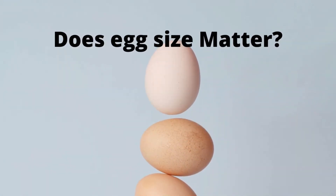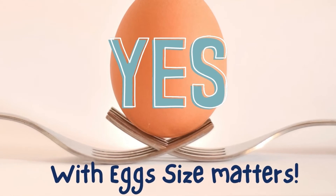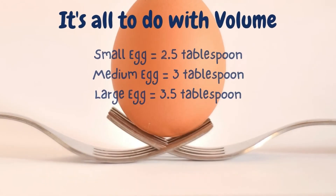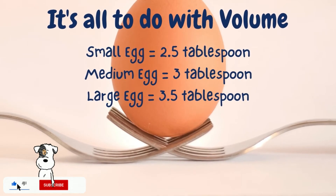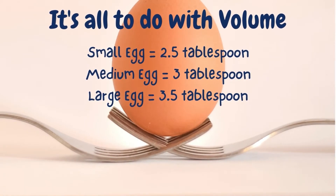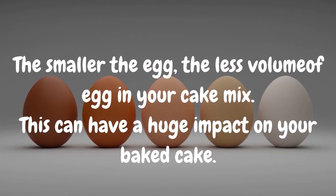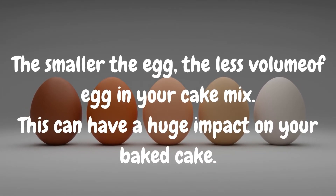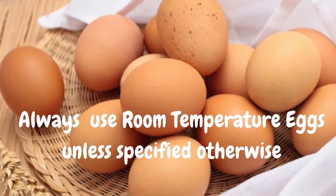When you look at your cake recipe, you'll find that it specifies the size of egg. So does the size of the egg matter? Absolutely, yes — the size does indeed matter, and it's all to do with the volume. A small egg has about two and a half tablespoons of egg material, but a large egg has 3.5 tablespoons. If you multiply this by the amount of egg your recipe calls for, you can see why a smaller egg has less volume of egg in your cake mix, and this can have a huge impact on your baked cakes. So if your recipe specifies the size of eggs, do try and stick to it.